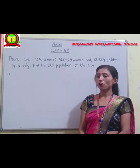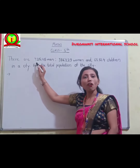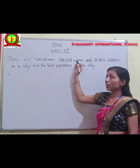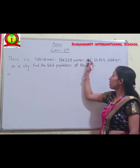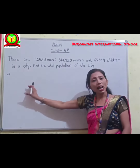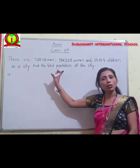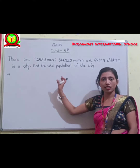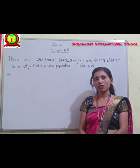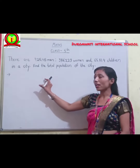For that, we have to know the total population of men in a city, and after that women, and after that children. By adding the sum of all these, we get the total population of a city. We have to solve it by statement — without a statement, the answer should be incomplete.